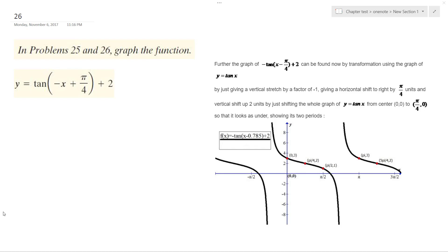So we've got a graph here, or we want to graph this: tangent of negative x plus pi over 4 plus 2. Everything's shifted up 2, of course.